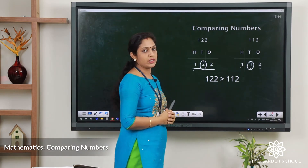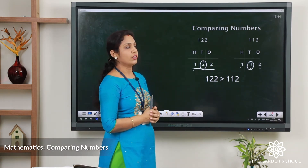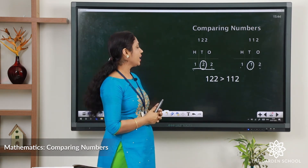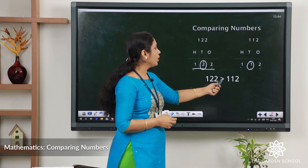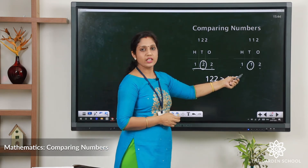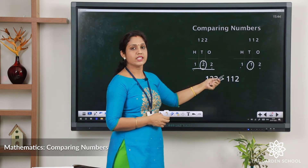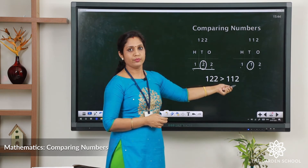In 122, the tens place has 2; in 112, the tens place also has 1. So which is greater? We can say that 122 is greater than 112, and this is represented using the greater-than symbol.